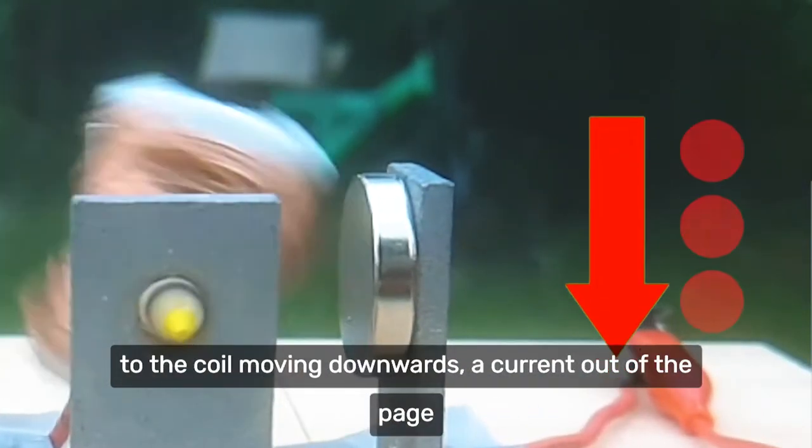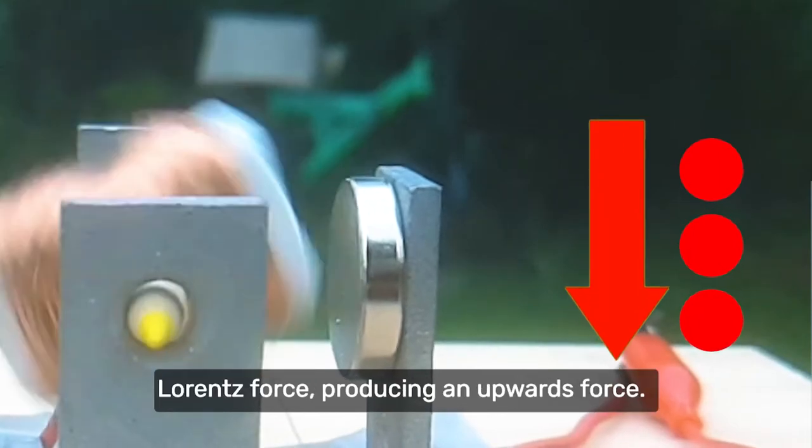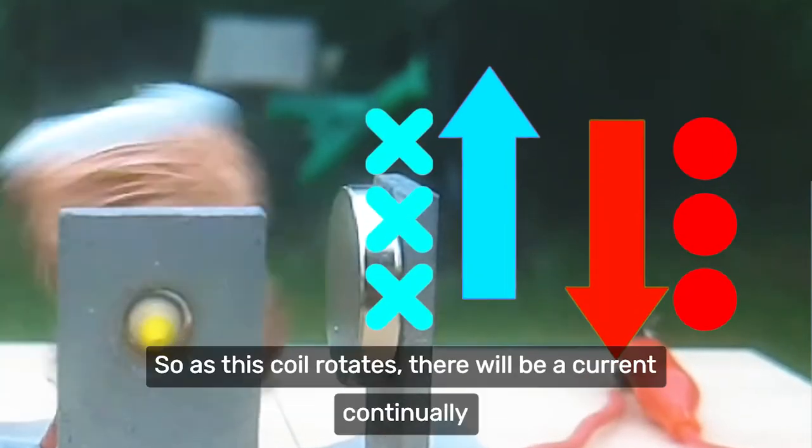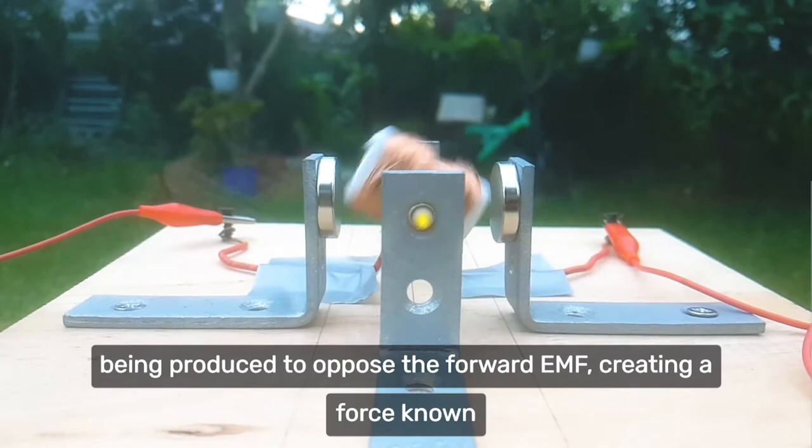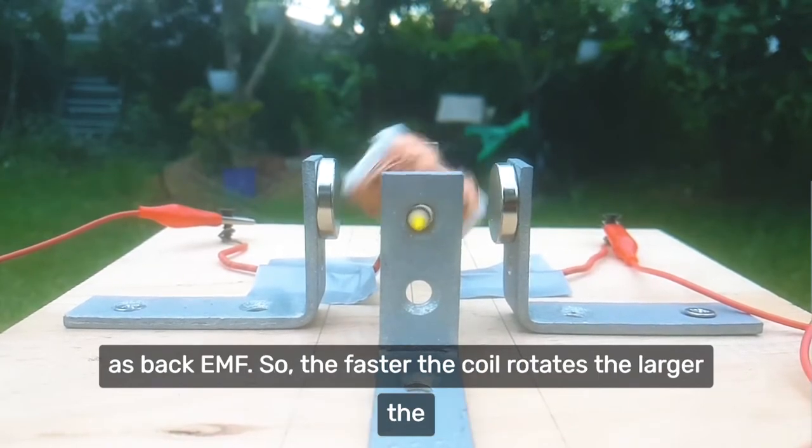Due to the coil moving downwards, a current out of the page will be produced to oppose the Lorentz force, producing an upwards force. So as this coil rotates, there will be a current continually being produced to oppose the forward EMF, creating a force known as back EMF.